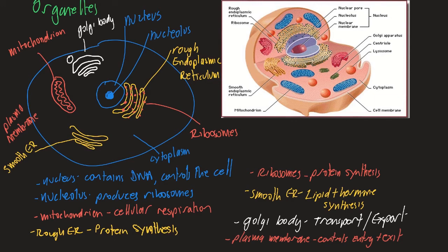Plants have most, if not all, of the same organelles. Plant cells do have mitochondria, the nucleus, the nucleolus, rough and smooth ER, the cytoplasm, the cell membrane, and the Golgi apparatus — but they also have a few additional structures.